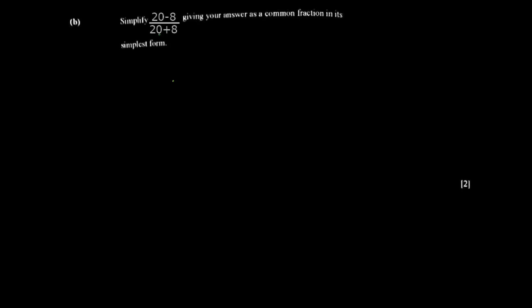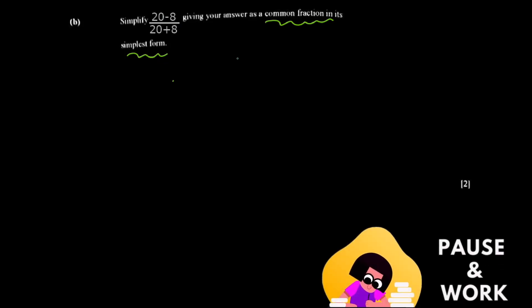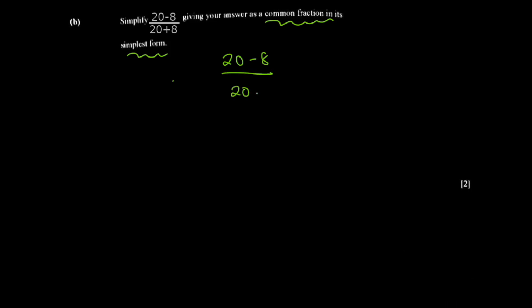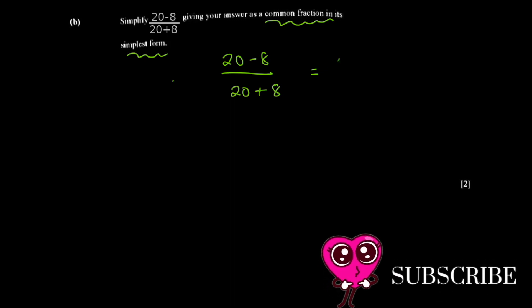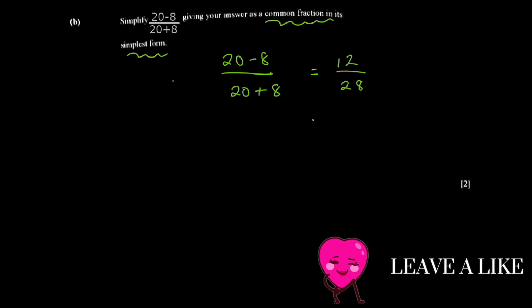Question 2b says: simplify 20 minus 8 divided by 20 plus 8, and give your answer as a common fraction in its simplest form. With fractions, you should know that you divide only when you have a simple numerator and a simple denominator, so you can simplify the top and bottom separately.